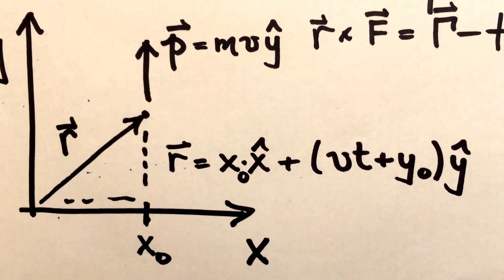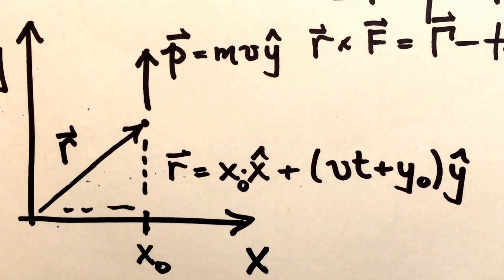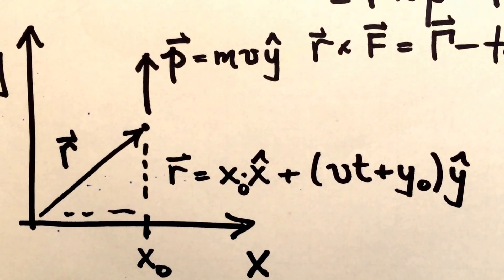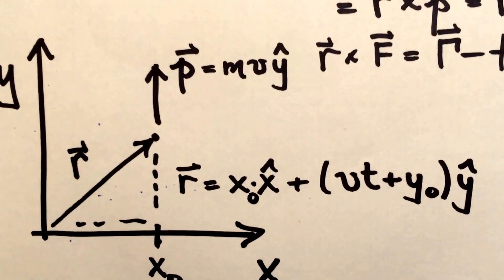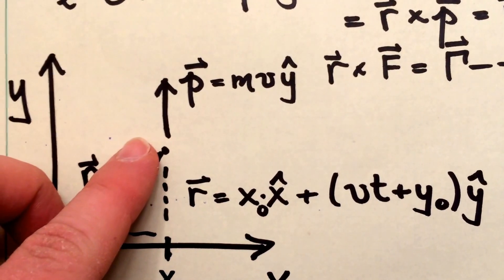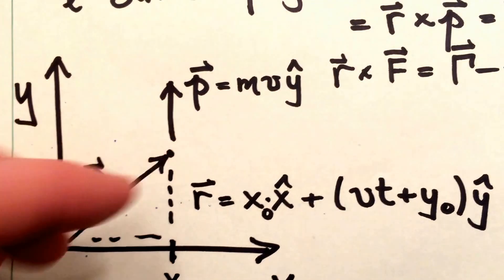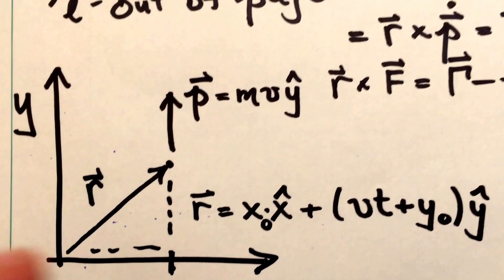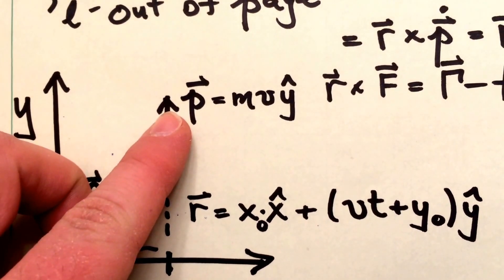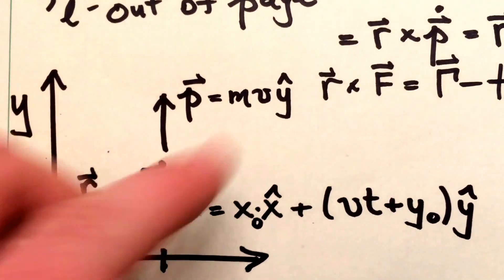And just to give a simple example of a case in which the angular momentum of the particle is conserved, imagine we have a particle with mass m traveling upward along the y-axis subject to no forces. So in that case, it has a momentum vector p, which is just its mass times its velocity times y hat.